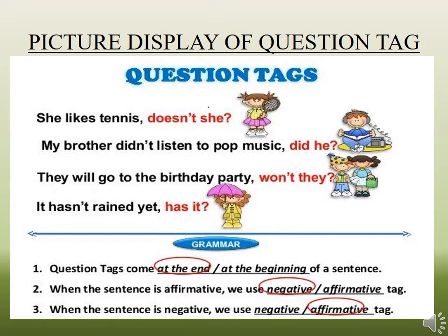The last example is 'It hasn't rained yet.' This is a negative sentence, so we use the positive question tag: 'has it?' To review: question tags come at the end of the sentence. When the sentence is affirmative, we use a negative question tag. When the sentence is negative, the question tag will always be positive — that is, affirmative.